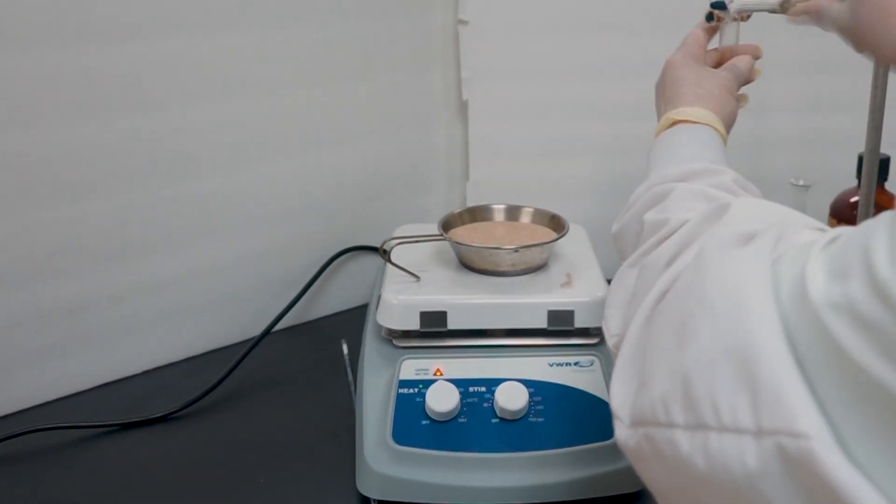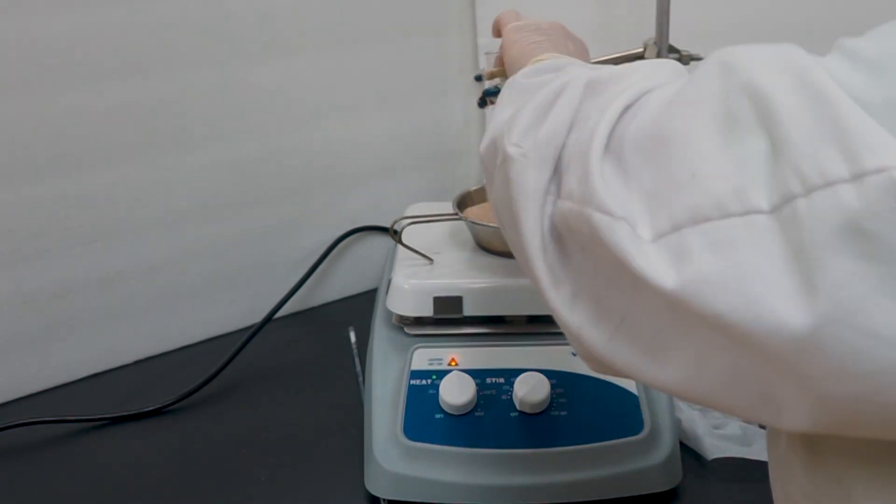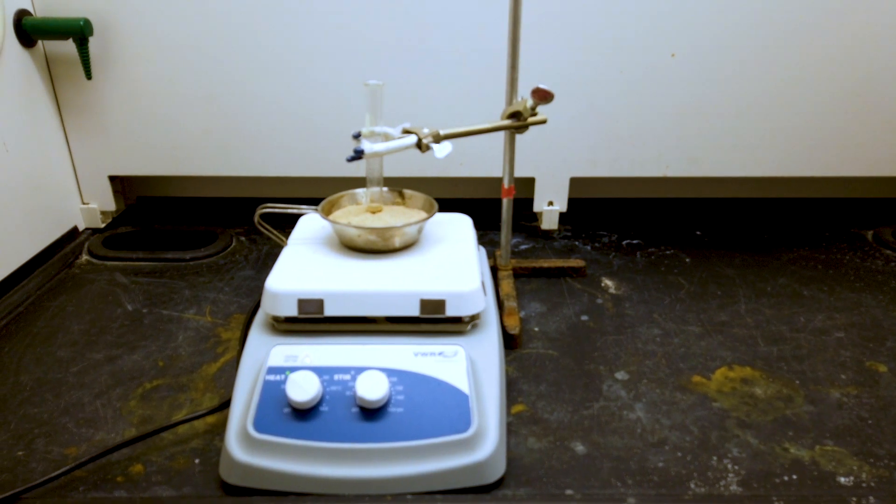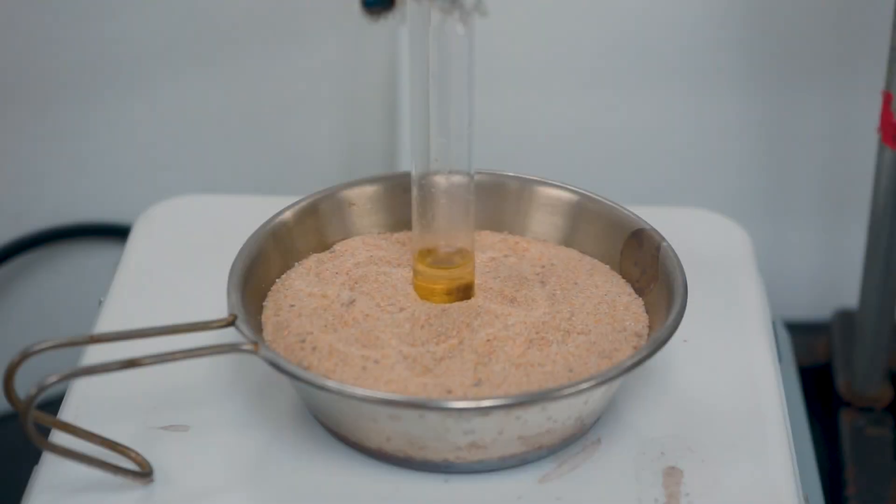Once the reactants have been added, place the test tube in a ring stand with a clamp and lower into the sand bath. Let the reaction reflux in a test tube for about an hour.